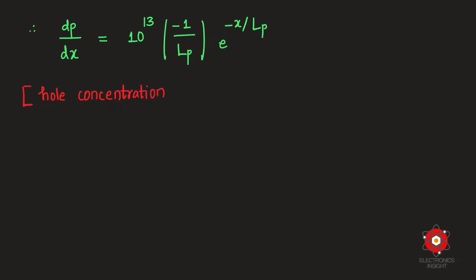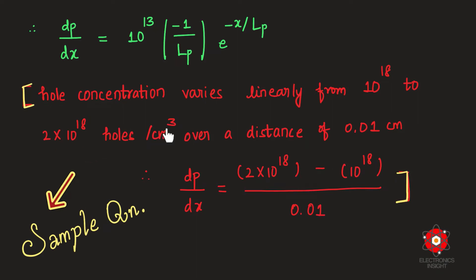As a side note, if hole concentration varies linearly — say from 10¹⁸ to 2×10¹⁸ holes per centimeter cube over a distance of 0.01 centimeter — then dp/dx would be computed as (2×10¹⁸ - 10¹⁸) / 0.01. This is another common way such problems are asked.